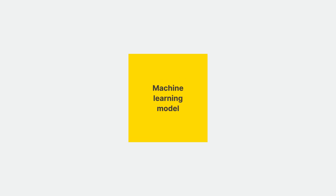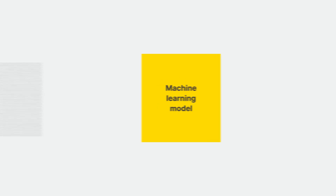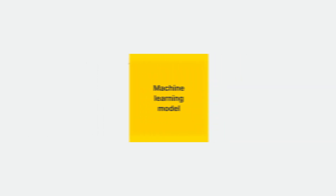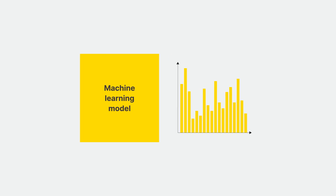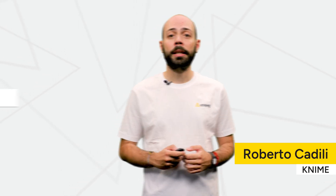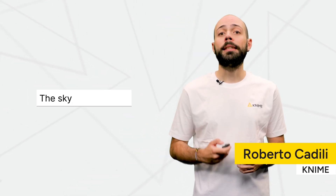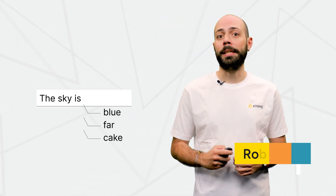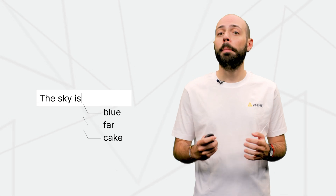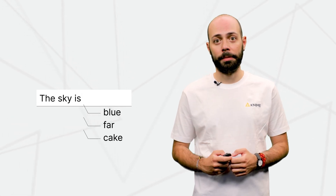In natural language processing, a language model is a type of machine learning model trained on a large corpus of text to generate a probability distribution over sequences of words. To put it simply, a language model leverages the patterns learned during training to predict the next most appropriate word in a sentence, based on the context of a given text.